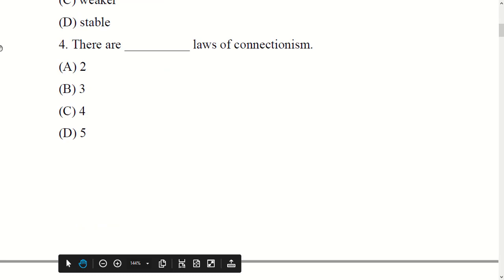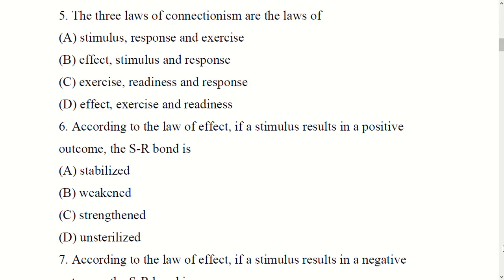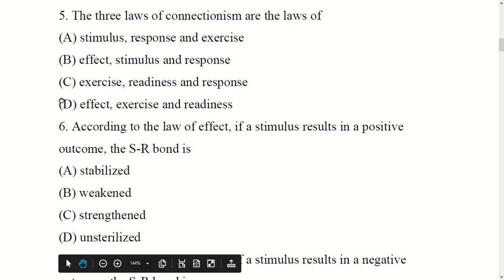There are how many Laws of Connectionism? Options: Two, Three, Four, or Five. The right option is Three. The three laws of connectionism are the Laws of Effect, Exercise, and Readiness. The correct option is D: Affect, Exercise, and Readiness.